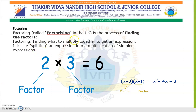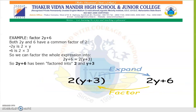Now let us see what factorization is. Factoring is the process of finding the factors. For example, 6 has factors 2 and 3, since 2 times 3 is 6. For the expression 2y plus 6: both terms have the common factor 2, since 2y equals 2 times y and 6 equals 2 times 3. Taking 2 common gives 2 times y plus 3.